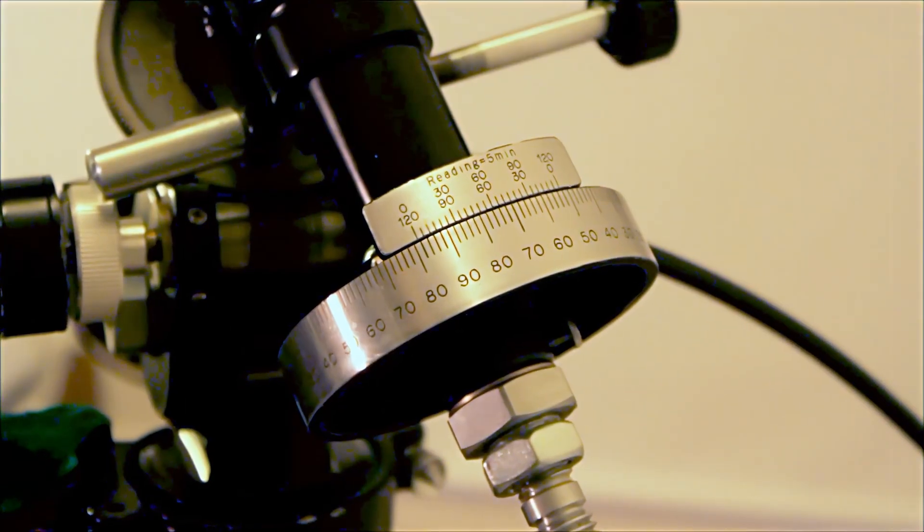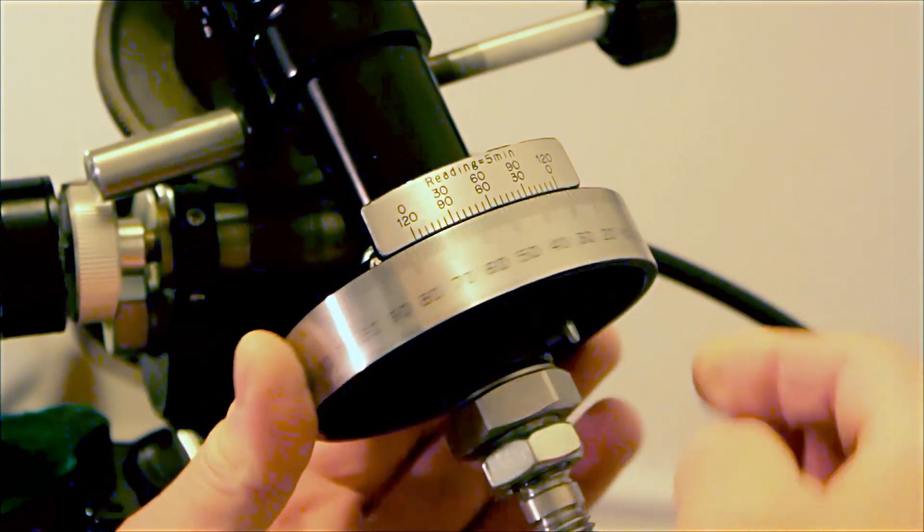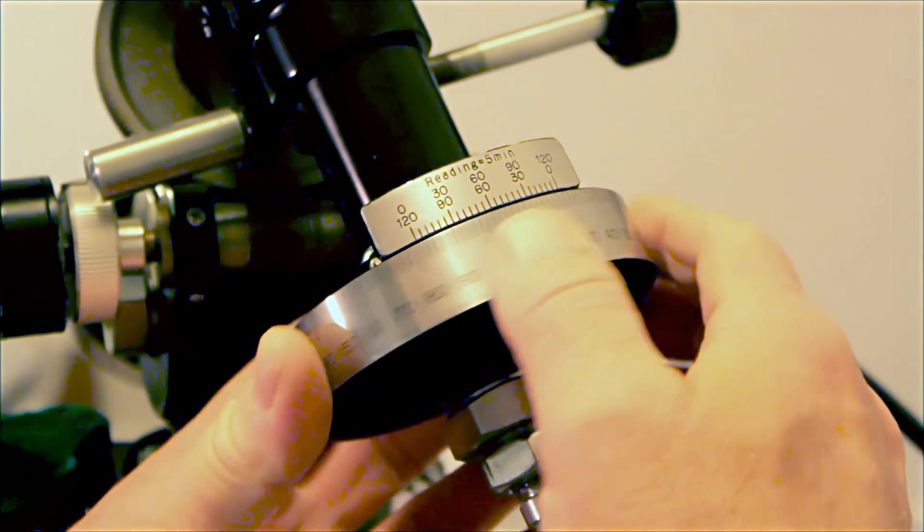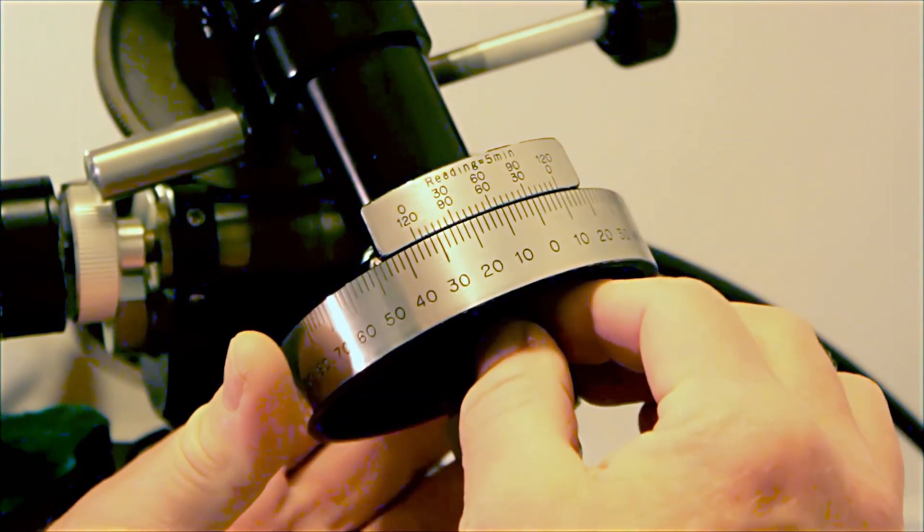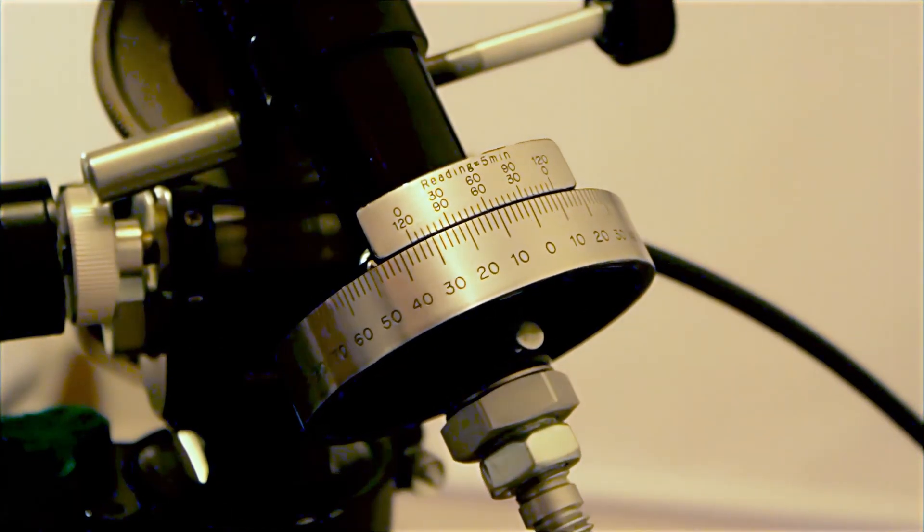Okay this is the declination setting circle on the Unitron Telescope. It's very similar to the right ascension. You can loosen it here, calibrate and set it up here. Once you get these things set in they can be fairly precise. You can see that this changes.